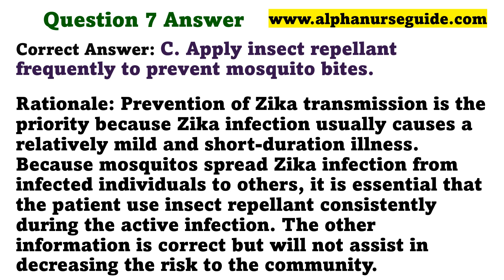Rationale: Prevention of Zika transmission is the priority, because Zika infection usually causes a relatively mild and short-duration illness. Because mosquitoes spread Zika infection from infected individuals to others, it is essential that the patient use insect repellent consistently during the active infection. The other information is correct, but will not assist in decreasing the risk to the community.